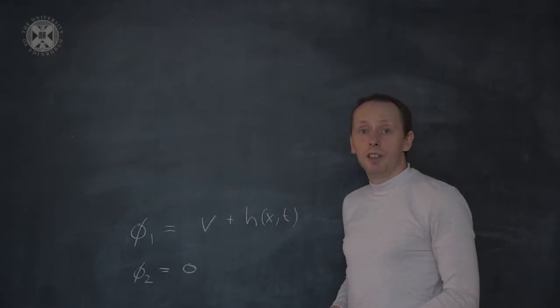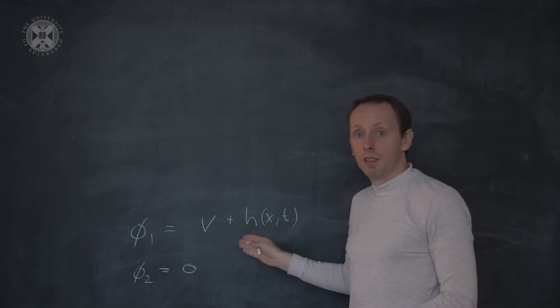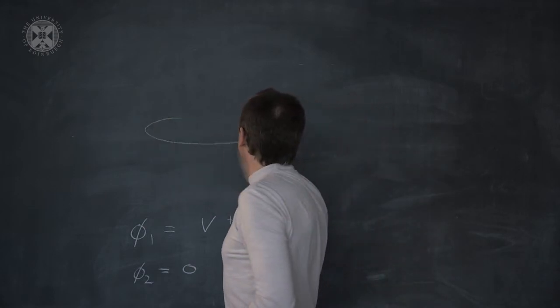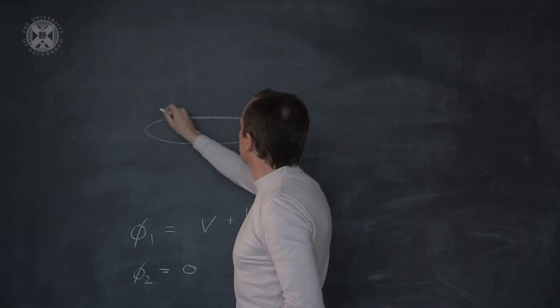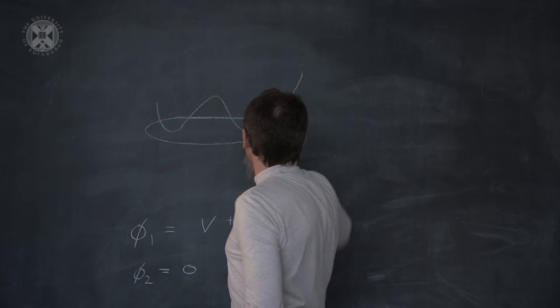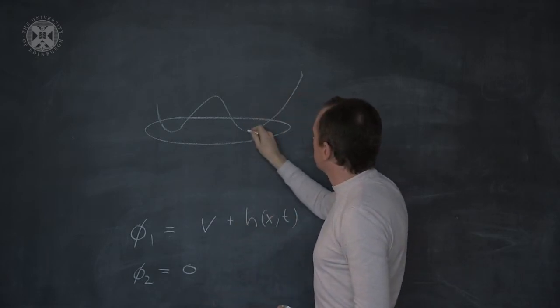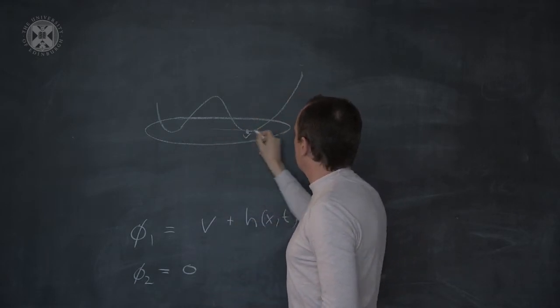After choosing this potential, we'll consider what are the oscillations of our slinky. So we have our disc, the Mexican hat potential, and the vacuum expectation value plus h.